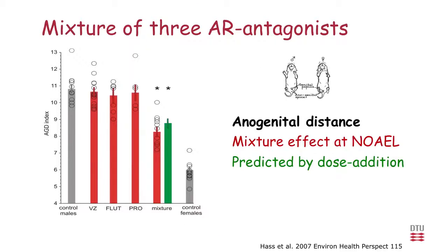In the mixture study, results for anogenital distance showed: the control males had normal AGD, the three single substances at their individual doses had no effect, but there was a clear and significant mixture effect. The green prediction line, based on dose addition, was quite close to what we observed. So for this data, we do see mixture effect at the NOAEL, and it could be predicted by dose addition.